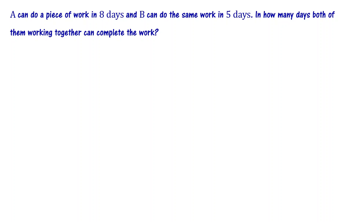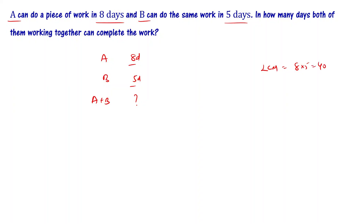Now let's solve this same problem a slightly different way — the units-based method. A can complete in 8 days, B can complete in 5 days, A plus B together in how many days? The LCM of 8 and 5 is 40. So total work is equal to 40 units. A completes 40 units in 8 days, so in 1 day A completes 40 divided by 8, which is 5 units.